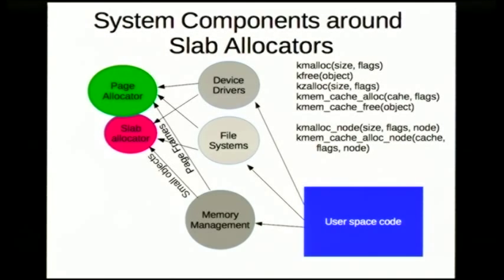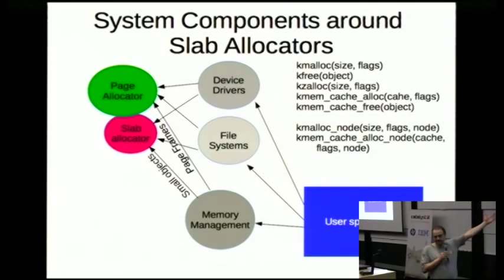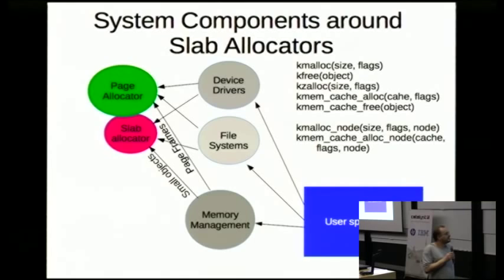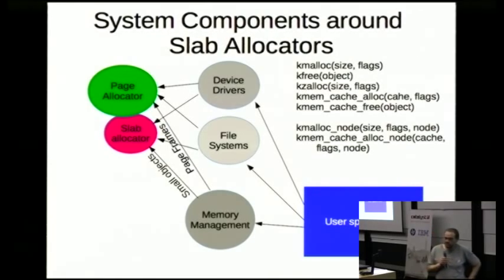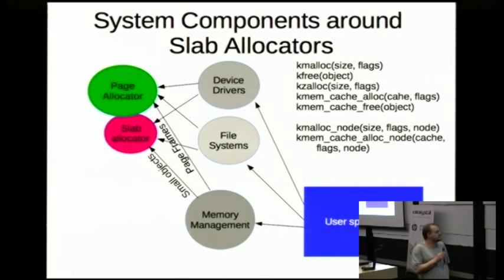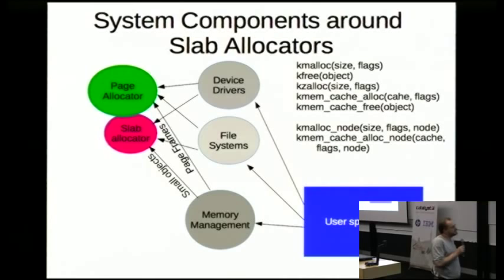This is how system components interact to reach the slab allocator. Userspace code does system calls — for example a file open — so the filesystem gets involved. The filesystem needs to store file metadata for the file handle being opened and therefore asks the slab allocator for a piece of memory. The slab allocator may then interact with the page allocator to acquire a large piece of memory to hack into pieces. Subsystems may do different allocation calls depending on whether they need page frames or small blocks of metadata.